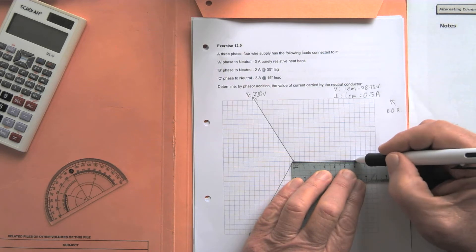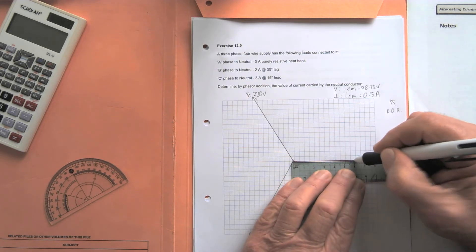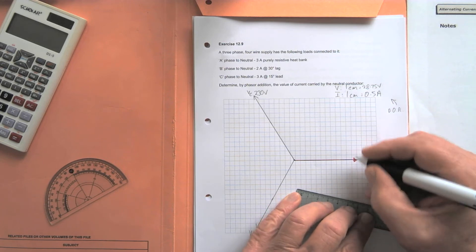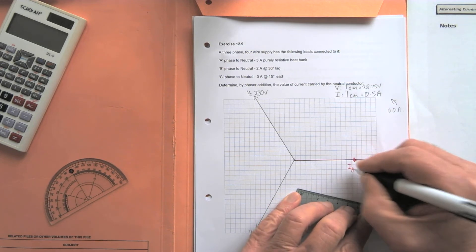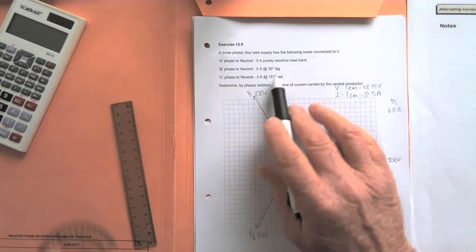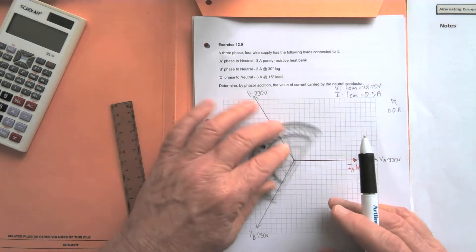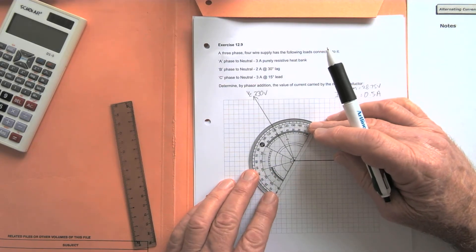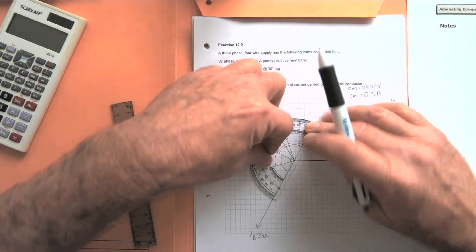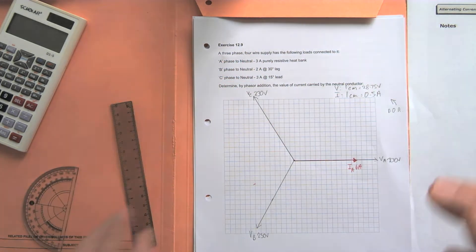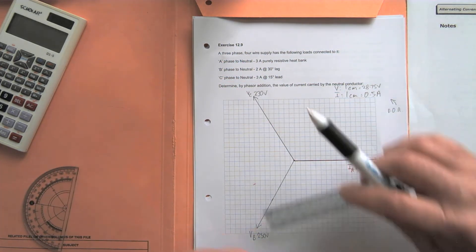For the A phase current, there we go, six to that point. So IA, six amps. The B phase is two amps lagging the B phase by thirty degrees. So put your protractor there like so, come around at 30 degrees and plot your two amps of current, which would be four centimeters long.